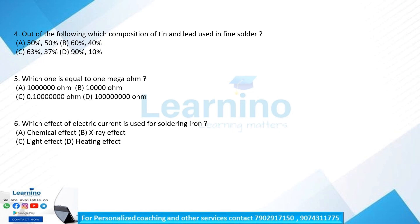The composition of fine solder: Option A is 50-50, Option B is 60-40, Option C is 63-37, Option D is 90-10. Fine solder composition is 63% tin and 37% lead — option C is the correct answer. The working temperature of electrician solder is 183 degrees Celsius.